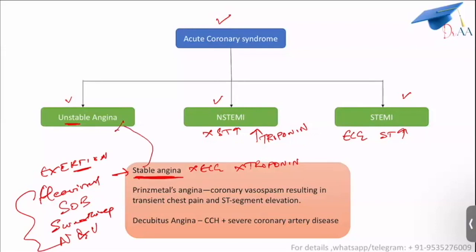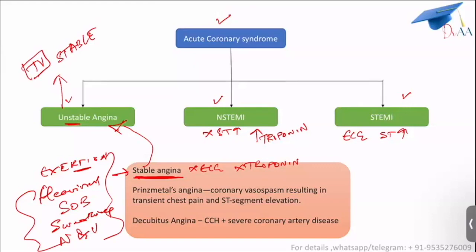Now let's see what is unstable angina. In unstable angina, the patient will have the same symptoms, but they are not on exertion — they can appear at any point of time. For example, while just watching TV, these symptoms suddenly start appearing. Usually there will be a past history of stable angina. The patient may say: this pain used to appear only on walking or jogging, but now it appears at rest — when watching television or just after waking up from sleep.